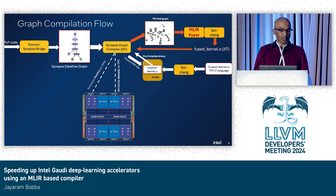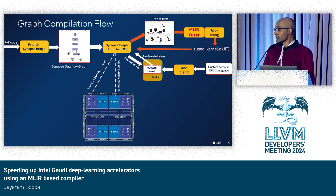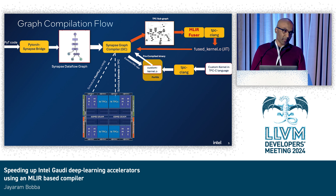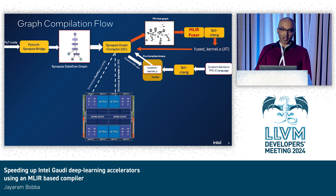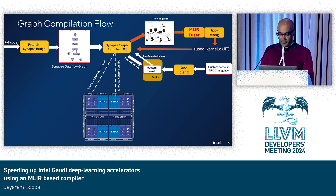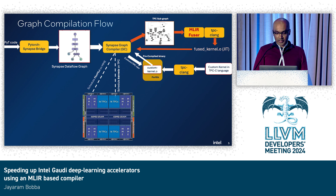We get a subgraph of operations from the graph compiler, and the fuser then fuses these things and creates LLVM IR. This IR is then handed off to an LLVM backend, which generates the final fused kernel, and this is then given back to the graph compiler. For operations that the fuser cannot handle, or in cases where the user has written their own custom kernel, these are provided by the performance library. The graph compiler then schedules all of this work on the chip, and they all run asynchronously.